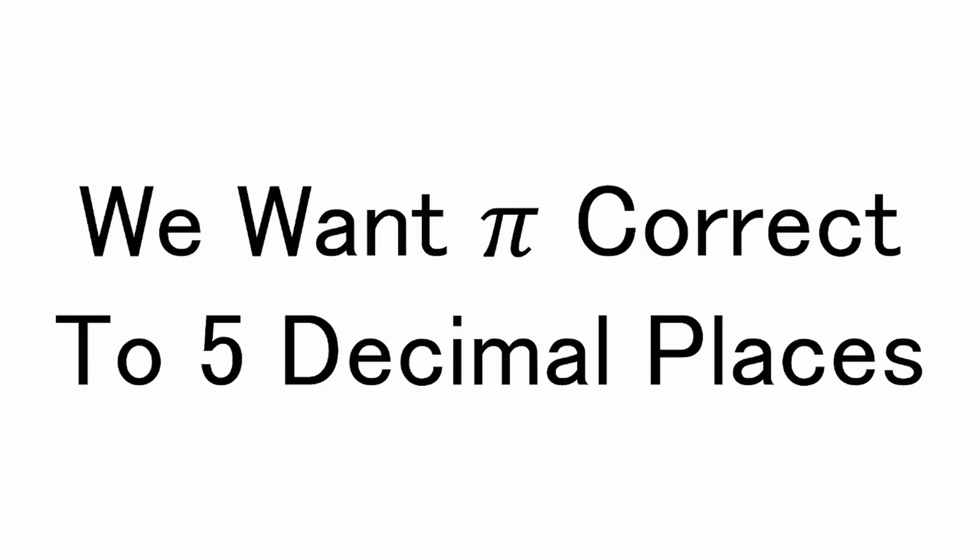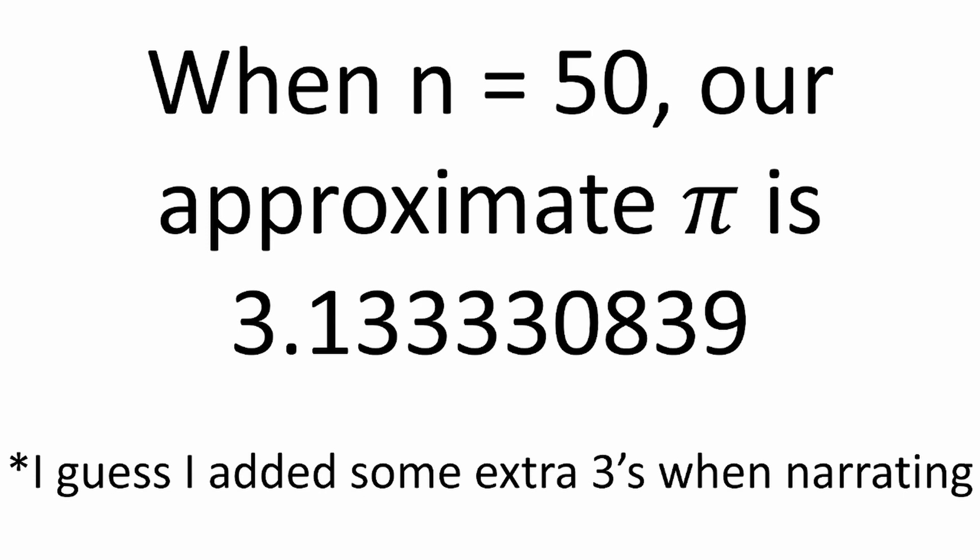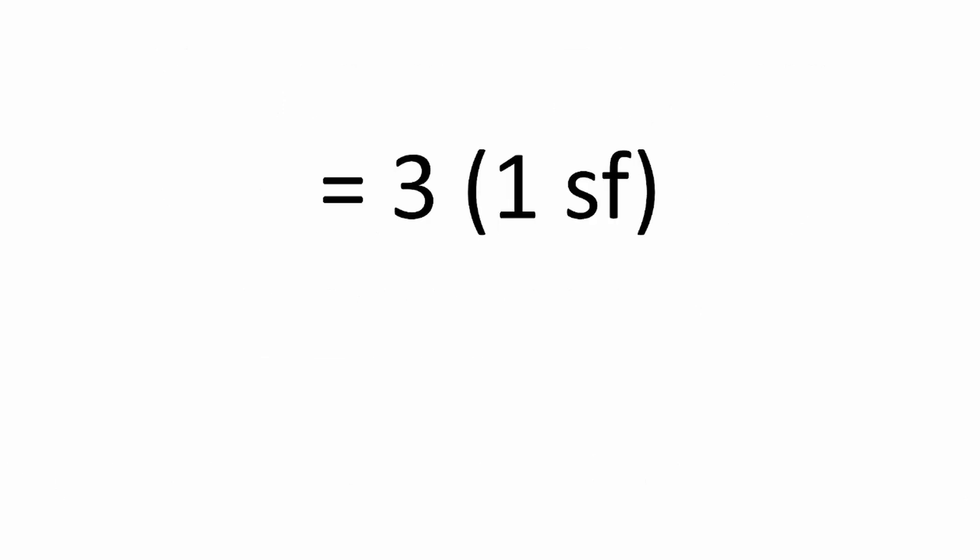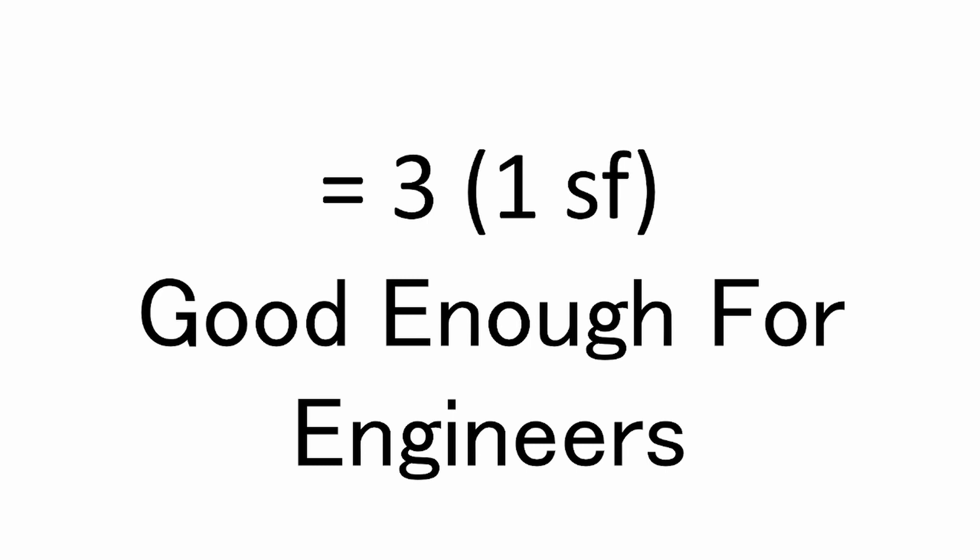Let's say we want pi to a decently high precision, of being correct to 5 decimal points. Good enough for most purposes really. Well, when n equals 50, our approximate pi is 3.1333330839, which evaluates to 3 to one significant figure. Engineers, feel free to stop watching here.